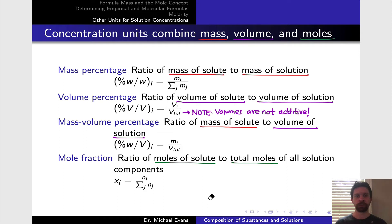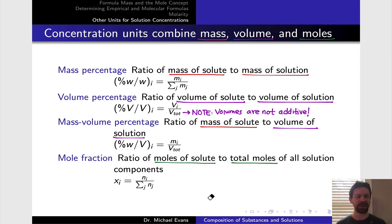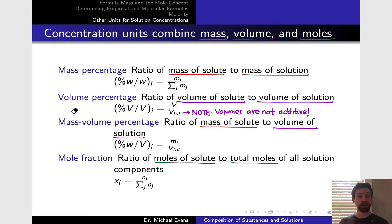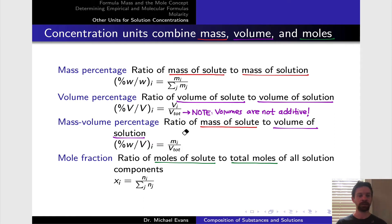These four concentration units each appear in various contexts. Mole fraction is very convenient in physical chemistry, where the fraction of a solution taken up by solute molecules is mathematically convenient and gives insight into the physical situation. In everyday life, mass and volume percentage are very common — for example, volume percentage is used to express alcohol content in beer and wine, and mass percentage commonly appears in things like bleach, where the strength of a cleaning agent matters.